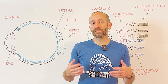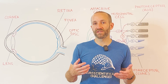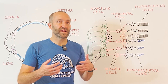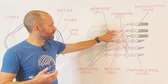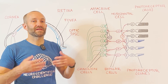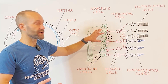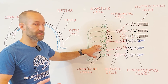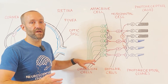When photoreceptors absorb photons, it causes changes in the amount of neurotransmitters these cells release, and this affects the activity of the next layer of cells, bipolar cells. Bipolar cells pass on signals about perceived light to the next layer, the ganglion cells, which carry the visual information to the brain.